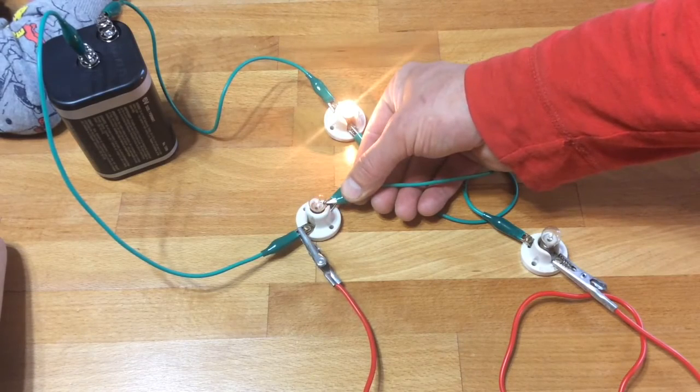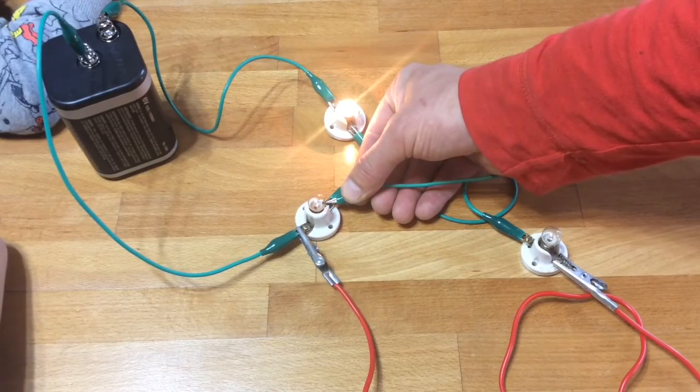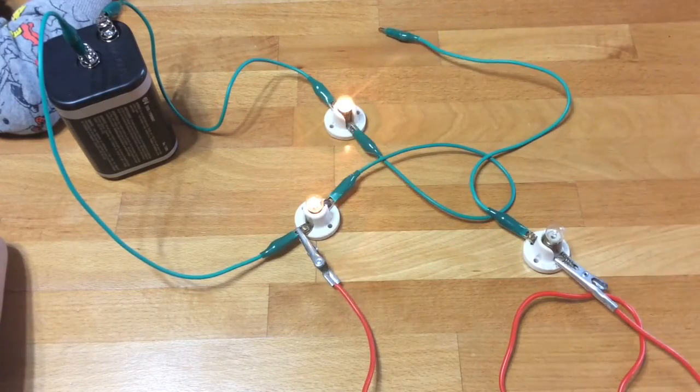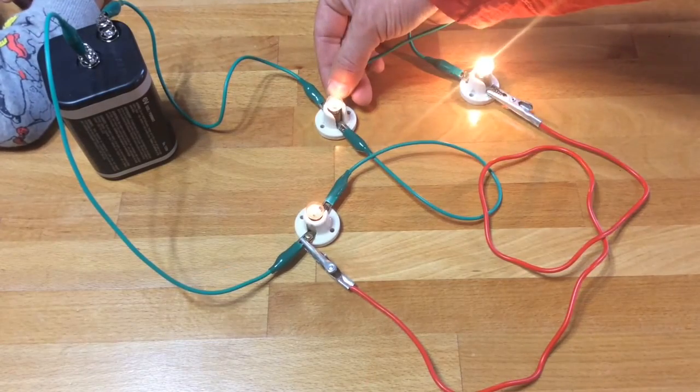And finally, here's a comparison of the two. Think about where the current is flowing. Think about the easier path. And remember that the brighter bulbs have more current flowing through them.